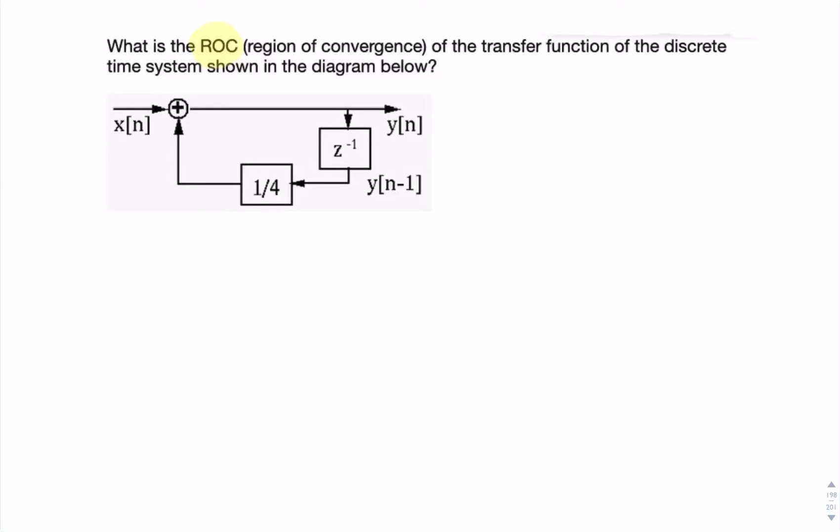So it would help if we had a transfer function, so that we could look at the denominator and look at the power series. So because of the z, it might be more convenient to write the input and output in z rather than n.